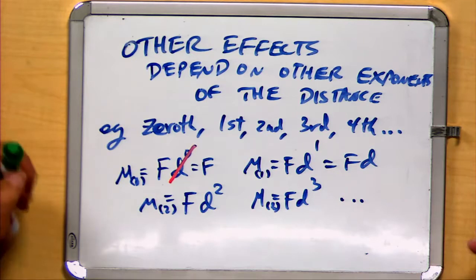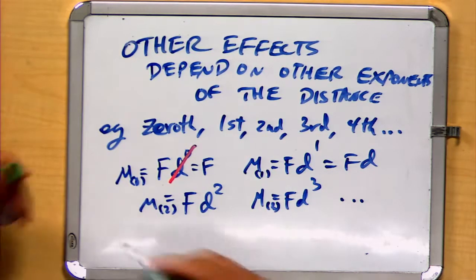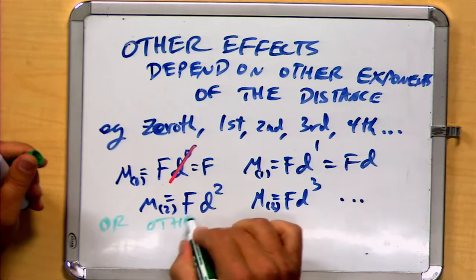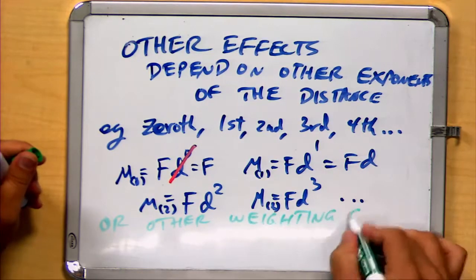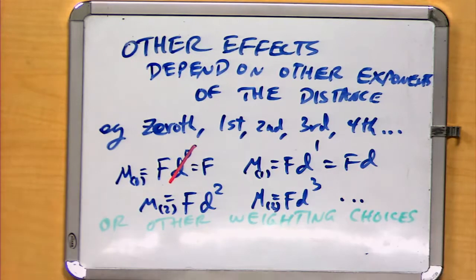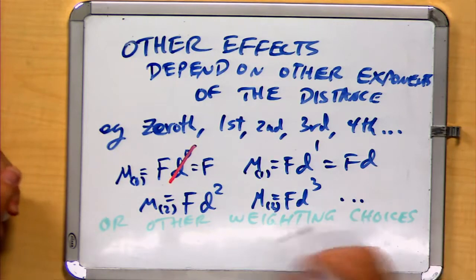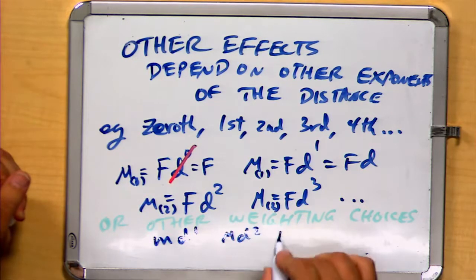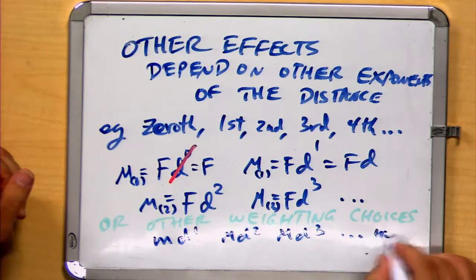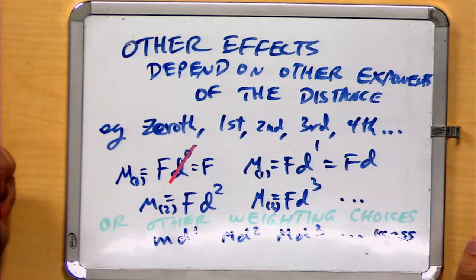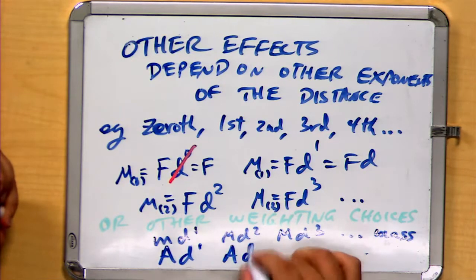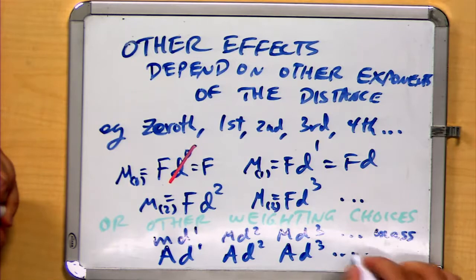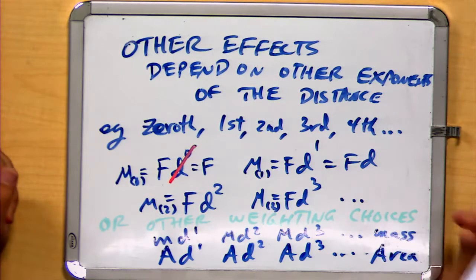Similarly, it could also just depend on other weighting choices. So instead of talking about the moment of force, we might talk about the moment of mass, md1, md squared, md cubed, for example. That would be the third moment of mass, or of area, ad1, md squared, md cubed. That would be the third moment of area, or the second moment of area.